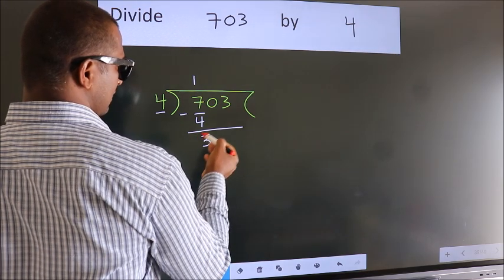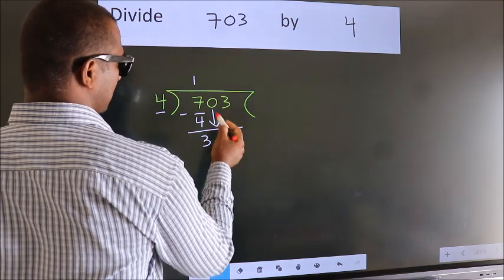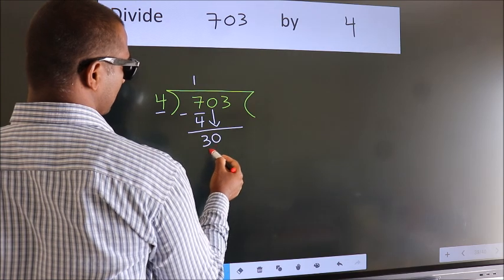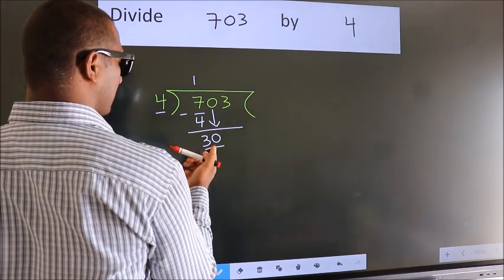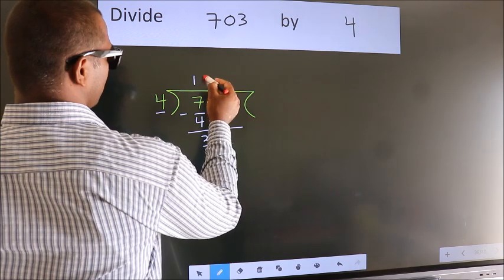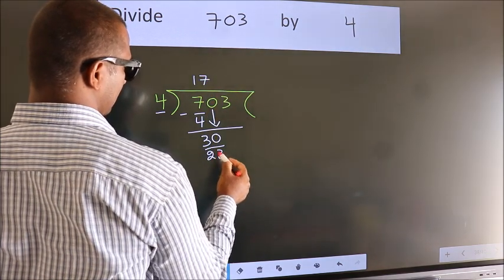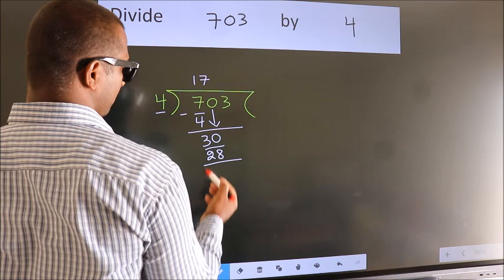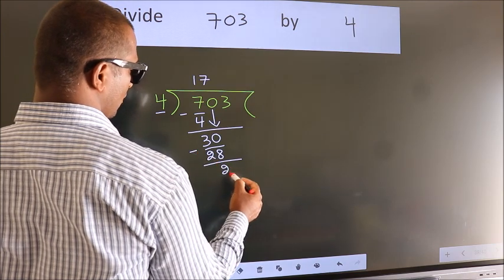After this, bring down the beside number. So, 0 down. So, 30. A number close to 30 in 4 table is 4 sevens 28. Now we subtract. We get 2.